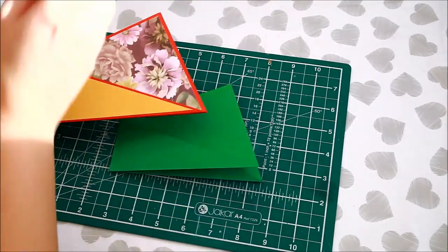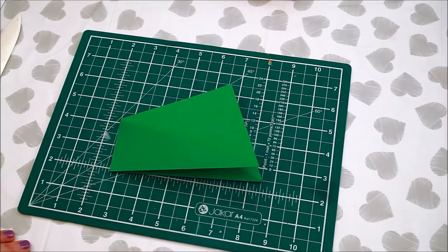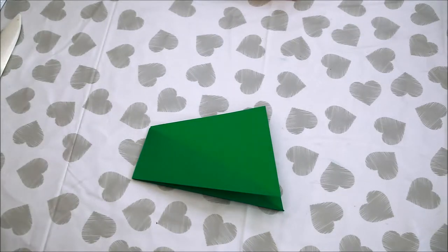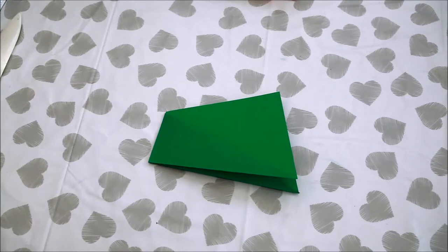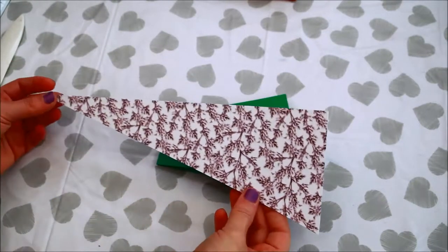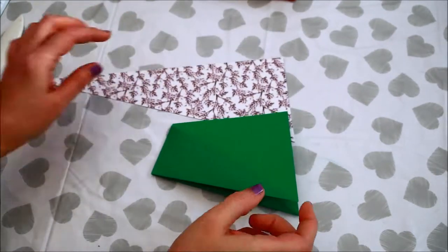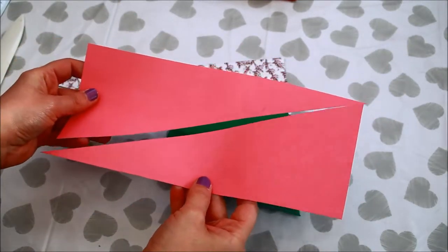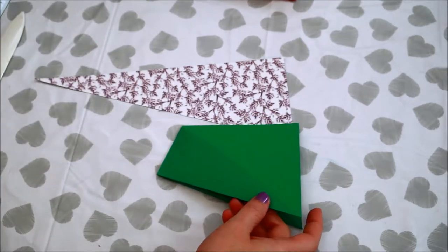Next step is to mat the front of the card. In order to do so, I trimmed two pieces of paper. The easiest way to get the sides right is to cut another 11 by 4 1⁄4 inches paper, cut it in half on an angle and trim the sides by 1⁄8 of the inch to make it a bit smaller.